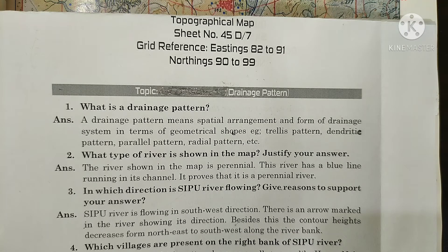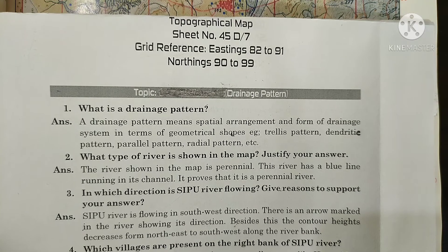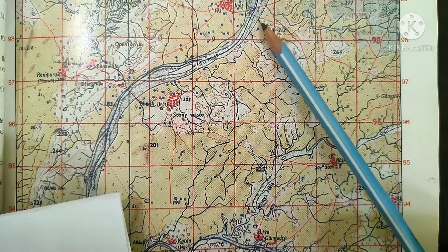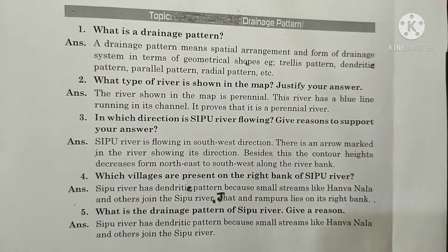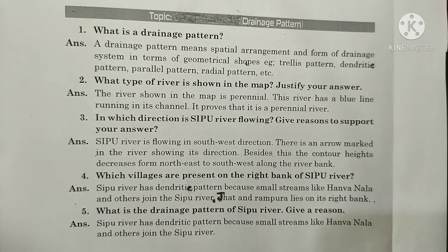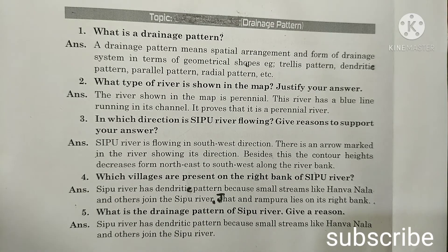Question 3: In which direction is Sipu River flowing? Give a reason. Sipu River is flowing in the southwest direction. There is an arrow mark in the river showing its direction; besides this, the contour heights decrease from northeast to southwest along the river bank. Question 4: Which villages are present on the right bank of Sipu River? Villages Jat and Rampura lie on its right bank. Question 5: What is the drainage pattern of Sipu River? Sipu River has dendritic pattern because small streams like Hanwa Nala and others join the Sipu River.